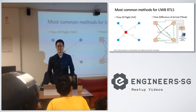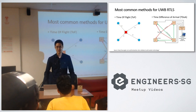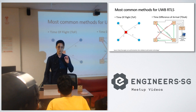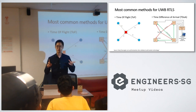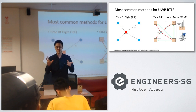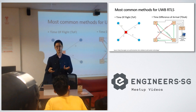Question: The DWR-1000 module — how many modules do you need, like one receiver and four transmitters? Answer: At minimum, you want two units for 1D ranging. If you want to know your position in a 2D space, you need 3. If you want to know your position in a 3D space, you need at least 4 — so 3 anchors and 1 tag.